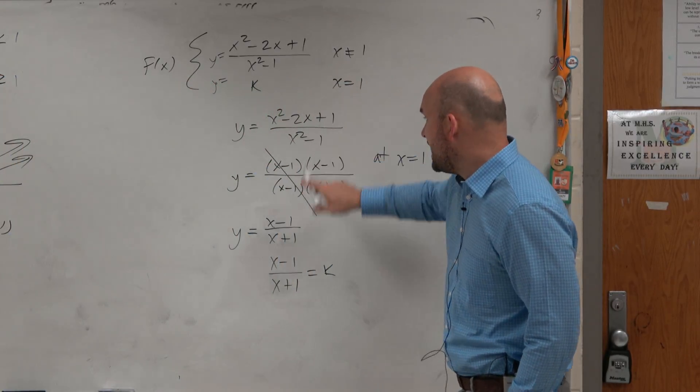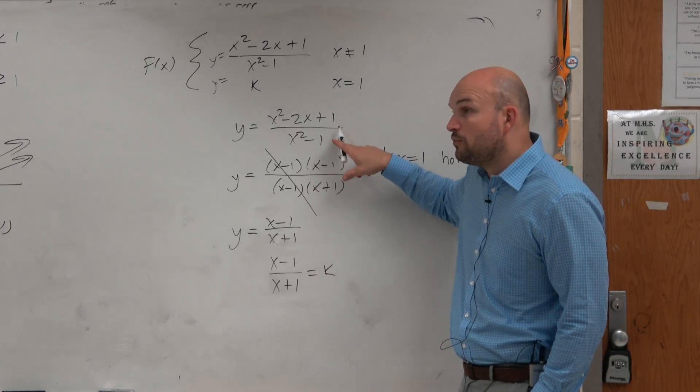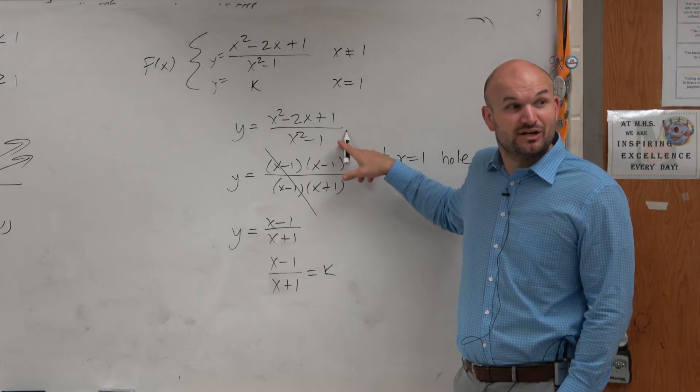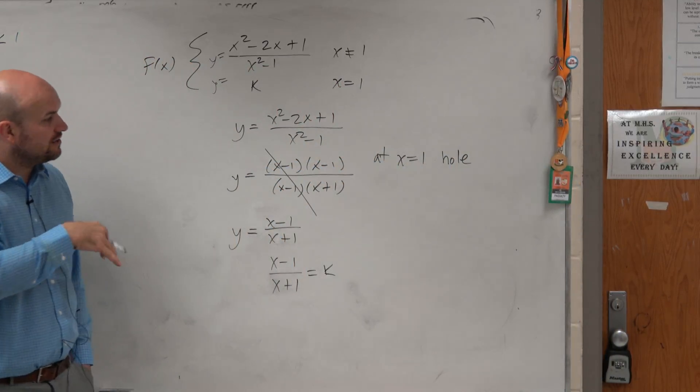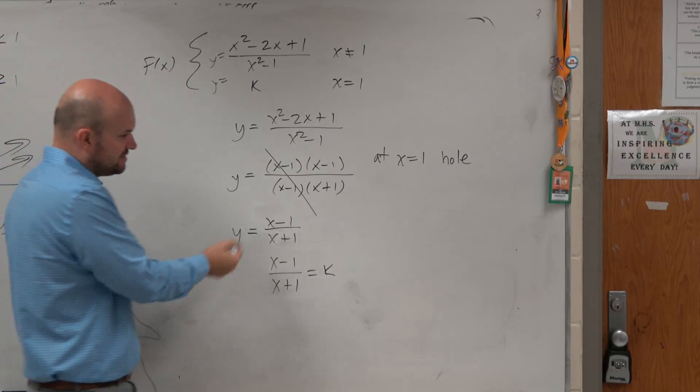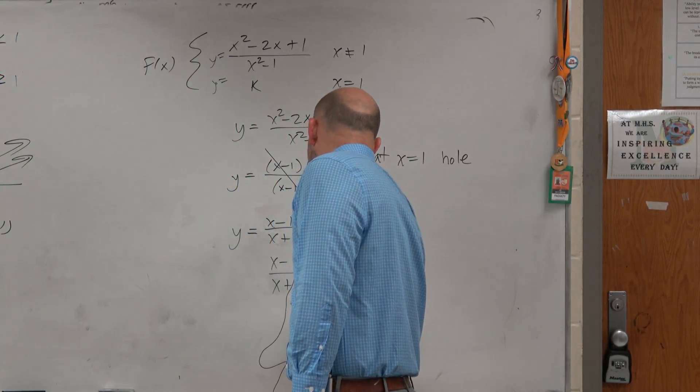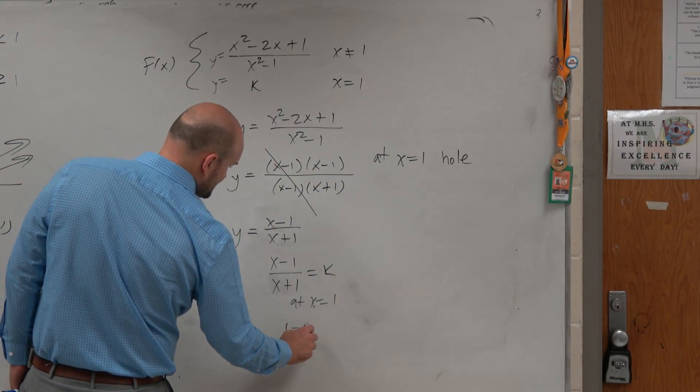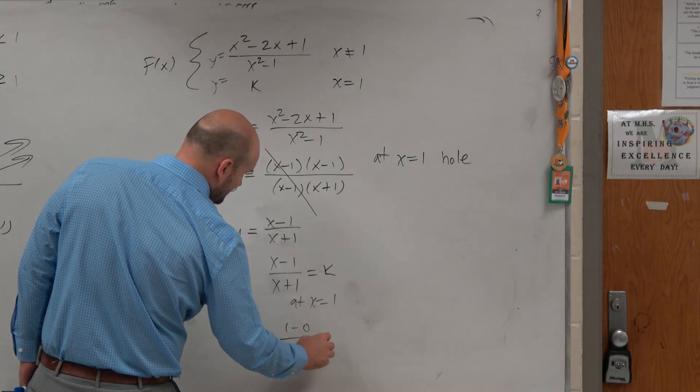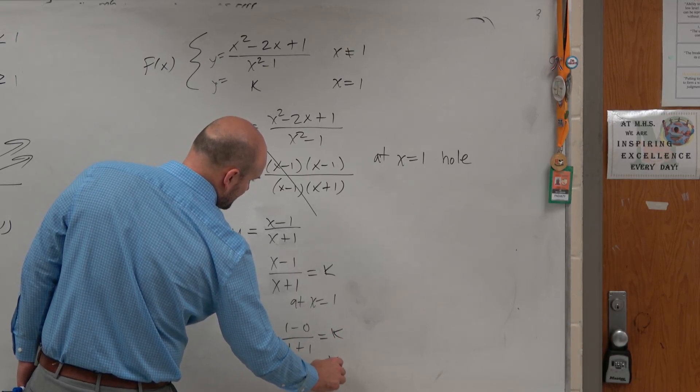And then can we now plug in 1 into this equation? Is it OK to substitute? Yes. Could we plug 1 into this one? No, because it made the denominator equal to 0. But what we found is when we simplify that out, it just creates a hole. Well, now at x equals 1, I have 1 minus 0 over 1 plus 1 equals k. And you guys can see that that answer is 0.